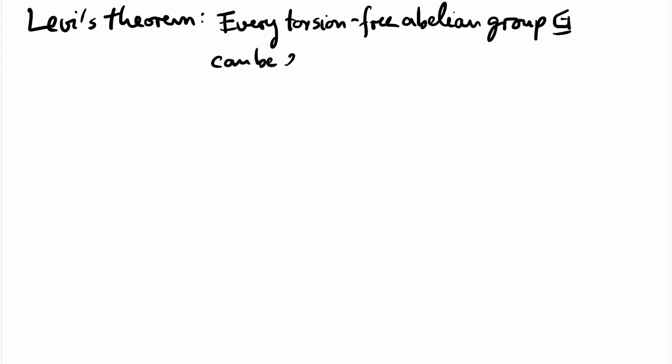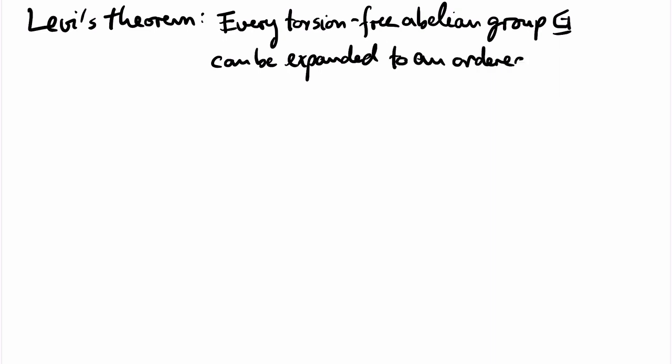We have seen two applications of the compactness theorem for graphs. We will now present an algebraic application for groups and prove Levy's theorem: every torsion-free abelian group G can be expanded to an ordered group. Note that the axioms of ordered groups are first-order sentences, and the property of being torsion-free is a first-order property too; in fact all these sentences can be chosen to be universal — that is, we only need universal quantifiers applied to some quantifier-free formula.